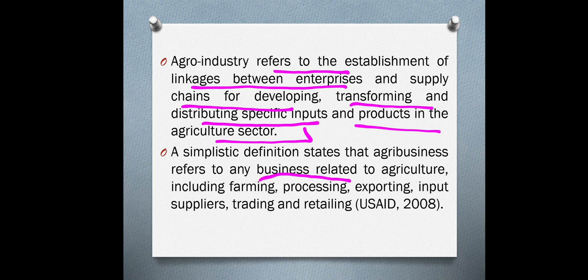A simpler definition: agribusiness refers to any business related to agriculture, including farming, processing, exporting, input supply, trading, and retailing. All those activities come under agribusiness. In other words, agribusiness covers all businesses directly and indirectly related to agriculture — farming, processing, exporting, input supply, trading, and retailing.